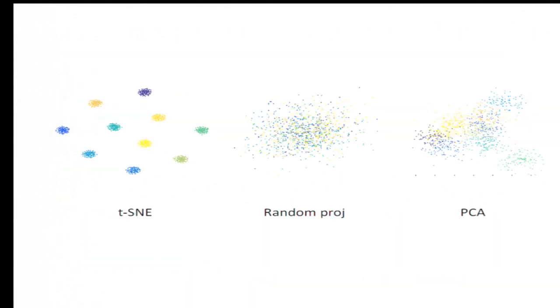So we can also verify this empirically. We just generate data from a mixture of 10 Gaussians, and we can see that t-SNE can output a very nice visualization, but random projection or PCA cannot produce anything very interesting.